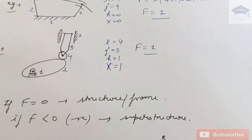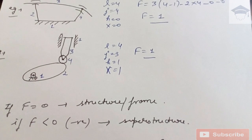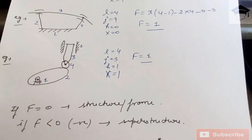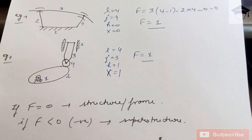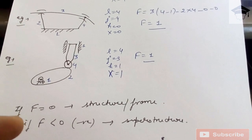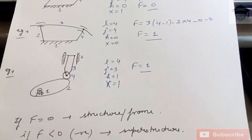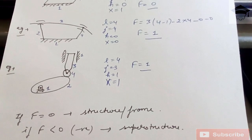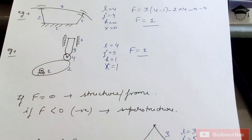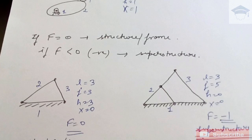Example of a structure or frame: there are three links, one of which is fixed. Number of links is three, number of joints is three at the intersection points, higher pair is zero — wait, higher pairs are present as point contacts among the links, and x = 0. The degree of freedom comes out to be zero, so this is an example of a structure or frame.